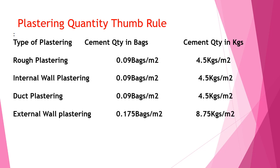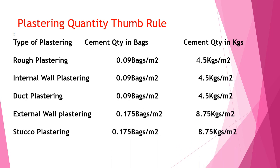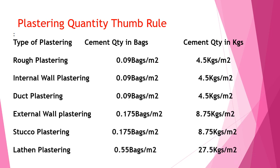For plastering thickness of 18 to 20 mm in two coats, 0.175 bags per m² is required. Stucco plastering: 0.175 bags per m² or 8.75 kg per m². Lath plastering: 0.55 bags per m² or 27.5 kg per m². Lath plastering is a plaster which has been fixed with a wire mesh between the reinforcement, and both sides have been plastered.